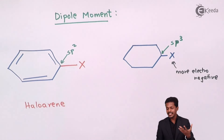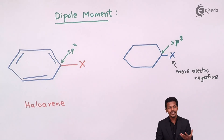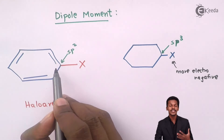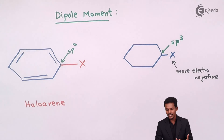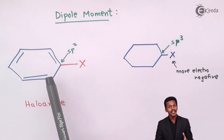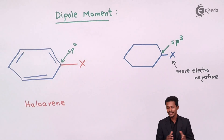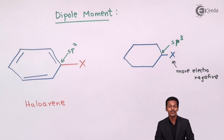In cyclohexyl halide the carbon is more electropositive, so the dipole moment is greater. In haloarene, because the carbon is sp2 hybridized, resonance takes place and the halogen X will have effectively less electronegativity while the carbon has more electronegativity. Therefore the net dipole moment in haloarene is less compared to that of cyclohexyl halide. This is the nature of the bond between carbon and halogen in haloarenes.